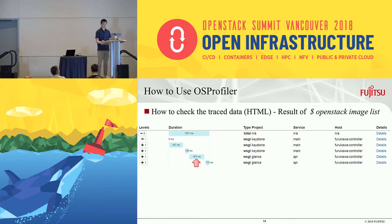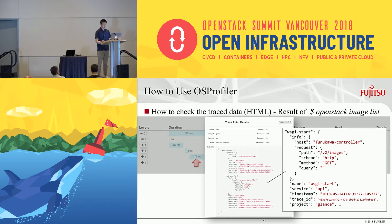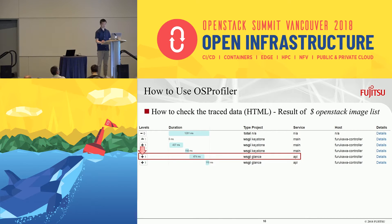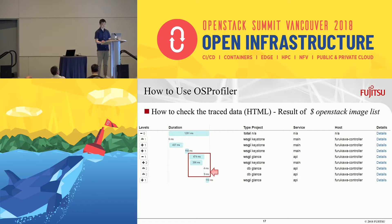Now let's take a look at the result of OS Profiler in more detail. From the result, you can see Glance took 474 milliseconds, and you probably suspect Glance could be a bottleneck of this process. Let's click the Details button. Now you can see Glance executed get v2/images. Let's click the Plus button to see what Glance actually did. Now you can see Glance just called Keystone, and Keystone was the one who took most of the time. The time of database access by Glance was almost negligible.